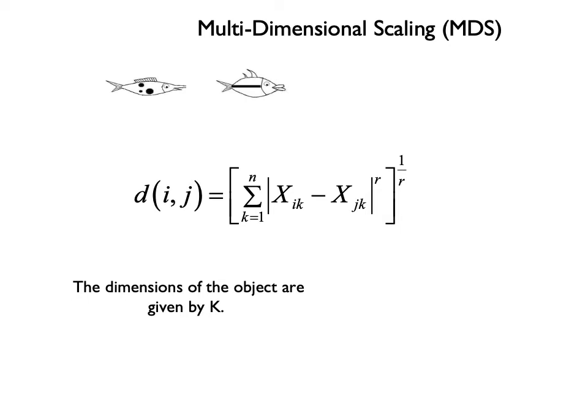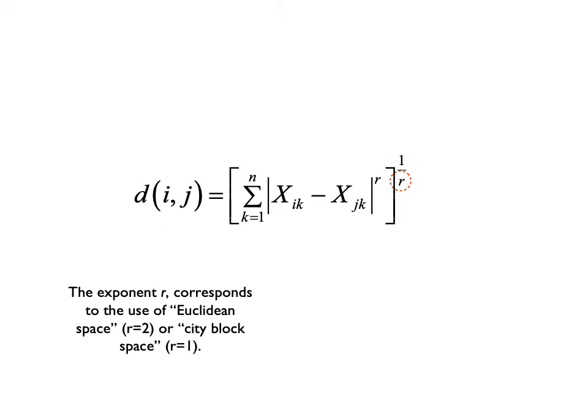Each dimension is indexed from one to n, so these are five-dimensional fish because five features vary. We take the absolute value, raise it to an exponent, and sum across dimensions. The exponent r tells us what kind of similarity we want to calculate. It turns out there are two kinds of similarity formulas corresponding to two kinds of psychological space: Euclidean space and city block space.